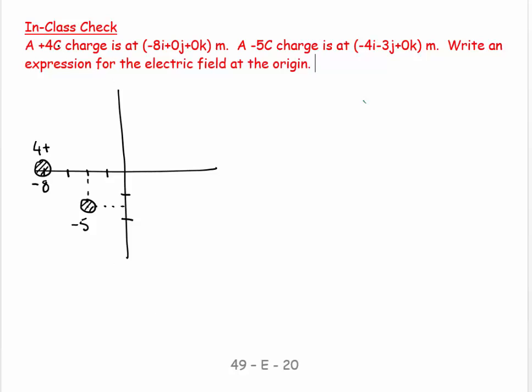So, the first charge, plus 4, is at minus 8, 0, 0, and my second charge, minus 5 Coulombs, is at minus 4, minus 3, 0. And write an expression for the electric field at the origin. So, there's my point of interest, and I want my electric field at the origin, and if I was to put a positive charge there, it would feel a repulsion from this guy, and it would feel an attraction towards that guy.